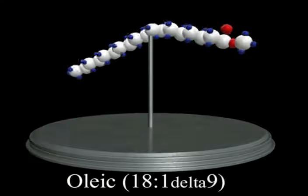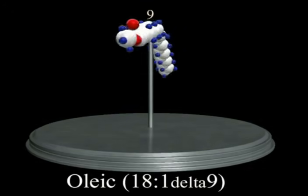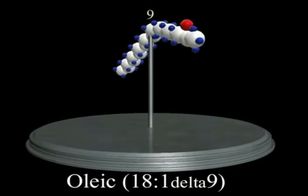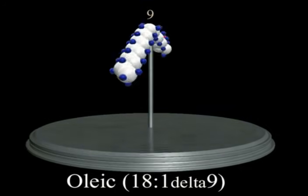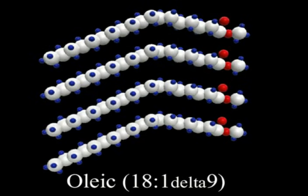Unsaturated fatty acids contain one or more carbon-carbon double bonds. For example, oleic contains one carbon-carbon double bond at the 9 position. Double bonds cause a kink in the structure of the fatty acid molecule. Unlike the linear structured saturated fatty acid molecules, these unsaturated kinked molecules cannot pack as tightly together in the solid.